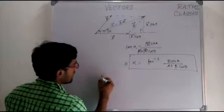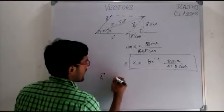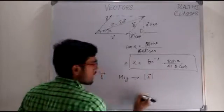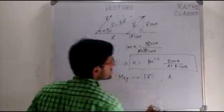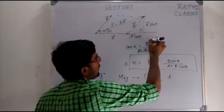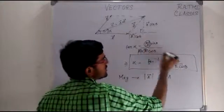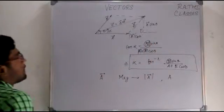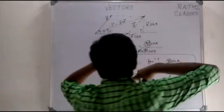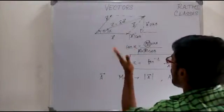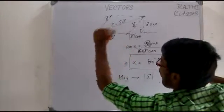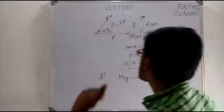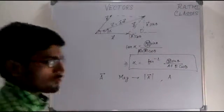If this is vector A, then its magnitude can be represented either as mod A or simply written in the standard notation — both representations mean the same thing, i.e., the magnitude of the vector. So the direction of vector C with respect to vector A is the angle alpha, given by the formula above.